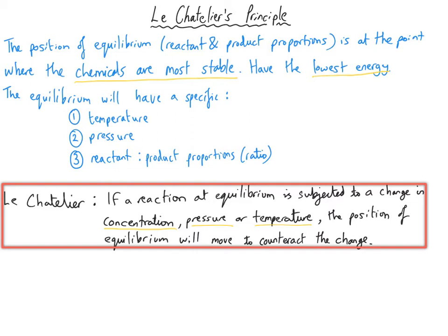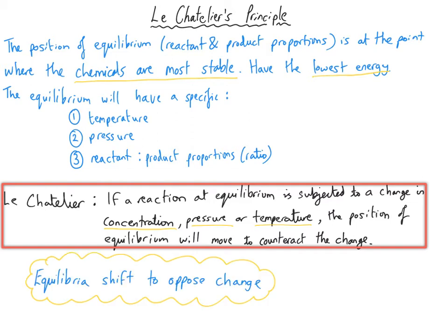We can reduce that definition down to something more usable: equilibria shift to oppose change. Those few words are really powerful for understanding Le Chatelier's principle and can help in exam situations. We should be absolutely clear that the equilibrium is not shifting through any conscious thought — it is doing it to maintain stability. If we impose a change upon it, that makes it less stable, and the equilibrium shifts spontaneously to become as stable as possible.